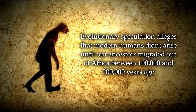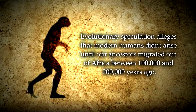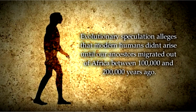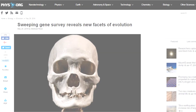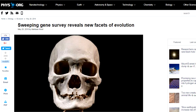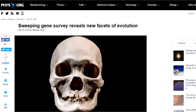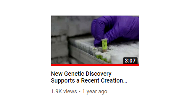Evolutionary speculation alleges that modern humans didn't arise until our ancestors migrated out of Africa, between 100 and 200,000 years ago. However, a number of secular and creationist research studies analyzing a variety of DNA clocks have indicated a far shorter timescale of no more than 5 to 10,000 years.